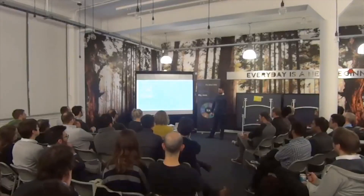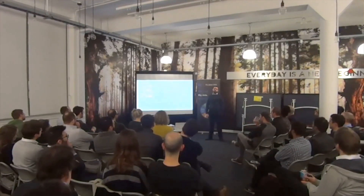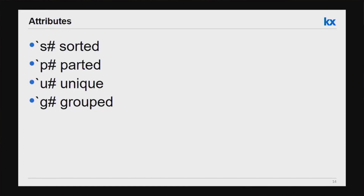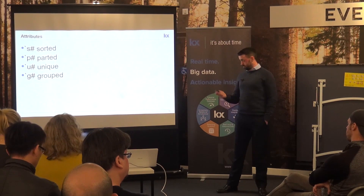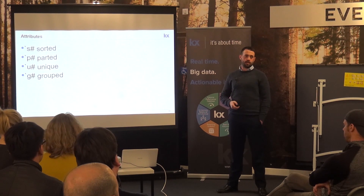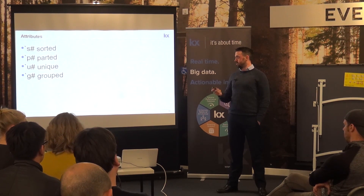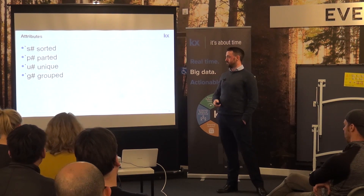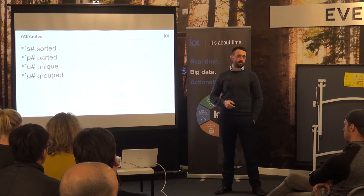KDB has data attributes that can provide very good performance increases when used carefully — some are better on disk, some in memory. The sorted attribute, applied to lists, vectors, tables, or dictionaries, means KDB can use a binary search instead of a linear search, increasing performance. The parted attribute allows KDB+ to find unique values very quickly and identify segment boundaries. There is also unique and grouped, with grouped being closer to what you'd find in other database technologies — similar to indexing.